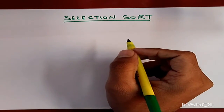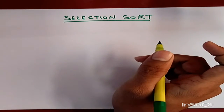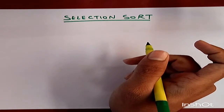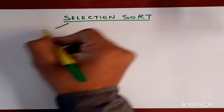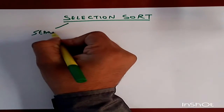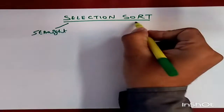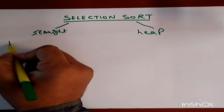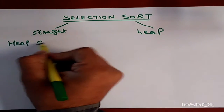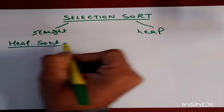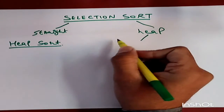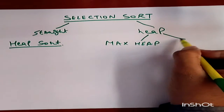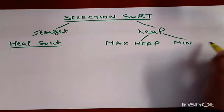Today we will learn about selection sort. In selection sort we basically deal with straight sort or heap sort. First we will consider heap sort, which is again of two types: number one, max heap, and another is minimum heap.